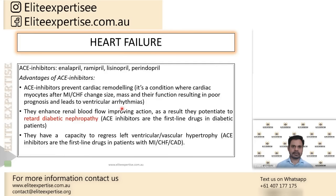ACE inhibitors also enhance and improve renal blood flow. They also prevent diabetic nephropathy. That is another reason why in all diabetic patients, the main drug of choice is ACE inhibitors. ACE inhibitors are considered as first-line agents in diabetic patients because they prevent diabetic nephropathy.